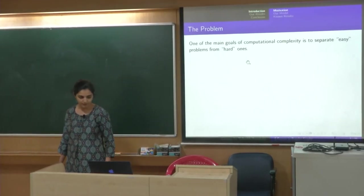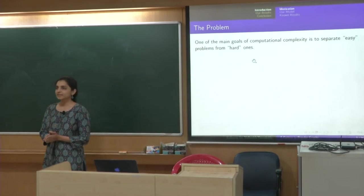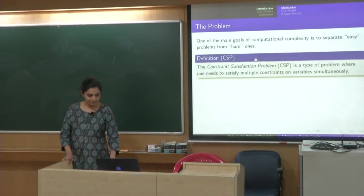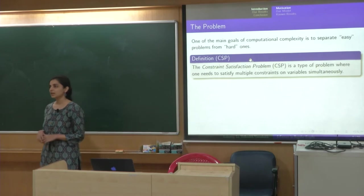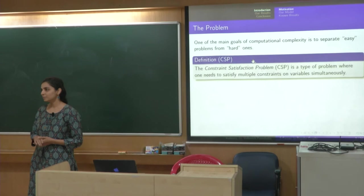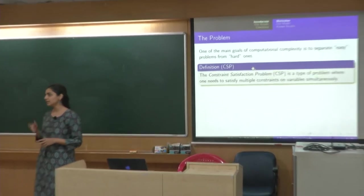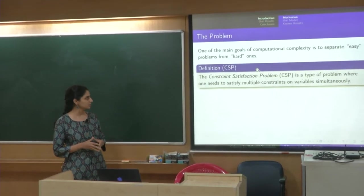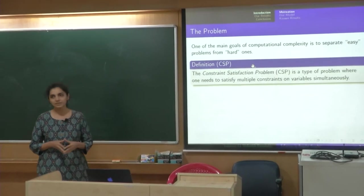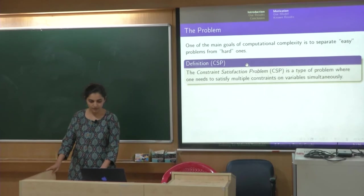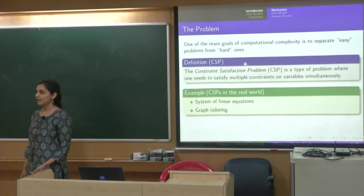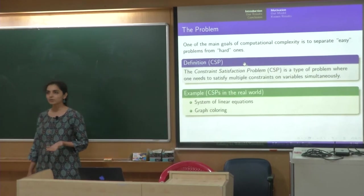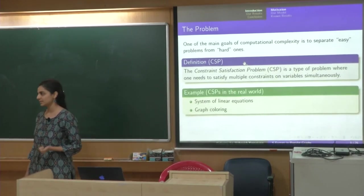Okay, so in complexity theory we are interested in understanding easy problems versus hard problems and constraint satisfaction problem is a very general problem which can actually model many interesting problems that we study in complexity theory, easy as well as hard. So, what is a constraint satisfaction problem? It is a type of problem where one needs to satisfy multiple constraints on variables simultaneously.